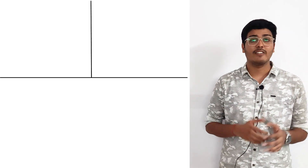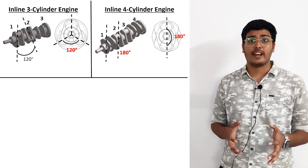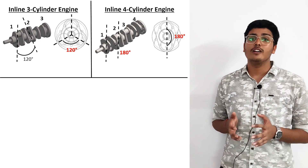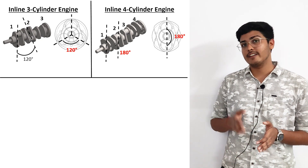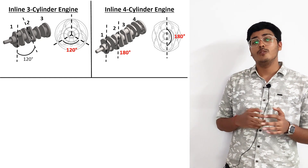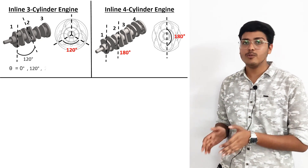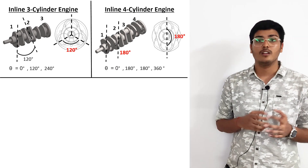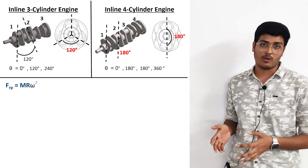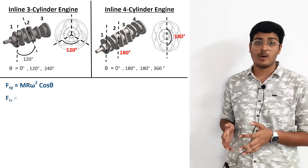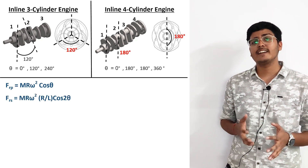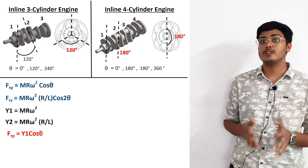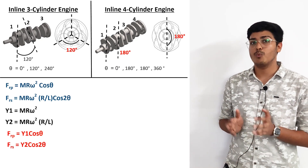Let us compare two engines: the inline three-cylinder and the inline four-cylinder. The crankshaft of the inline three has 120° separation between individual crank throws, while for the inline four the first and fourth crank throws are separated 180° from the second and third. The crank angles are θ = 0°, 120°, 240° for the inline three, and θ = 0°, 180°, 180°, 360° for the inline four. Letting y₁ = mrω² and y₂ = mrω²(r/l), the primary force = y₁·cos θ and secondary force = y₂·cos 2θ.